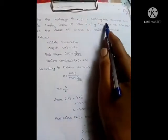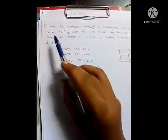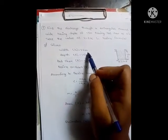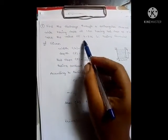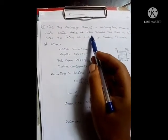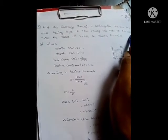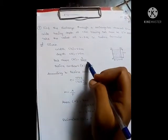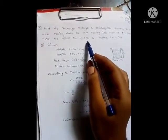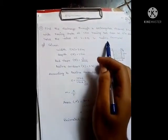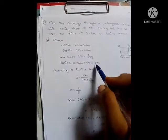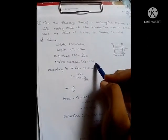Given data: width b is equal to 2.5 meters, depth is 1.5 meters, bed slope is 1 by 2000, and the Bazin's constant k is equal to 2.36.